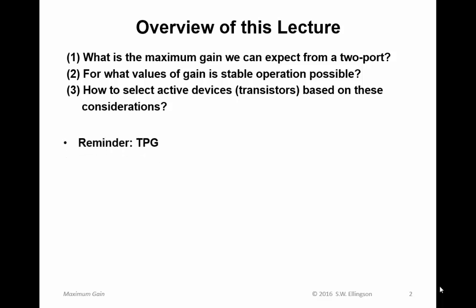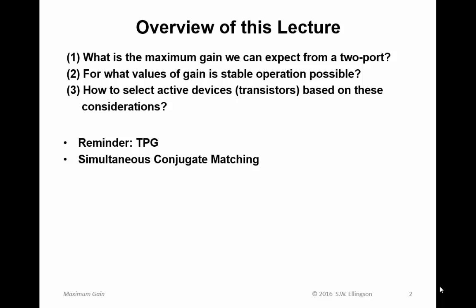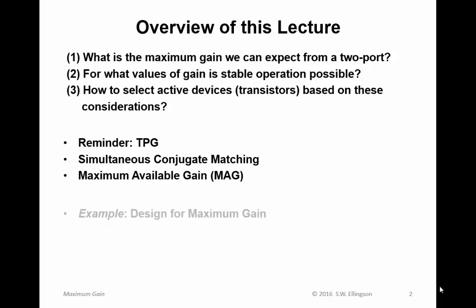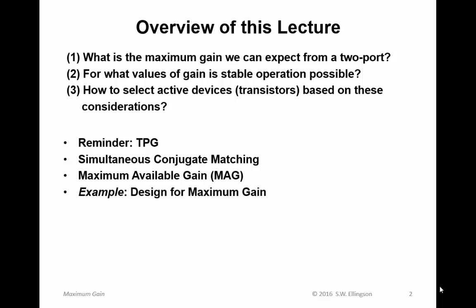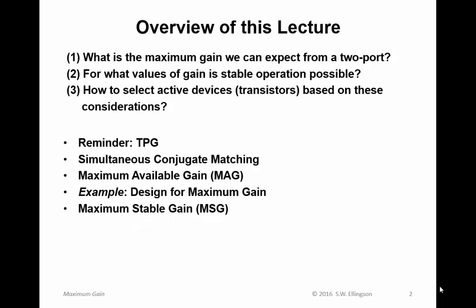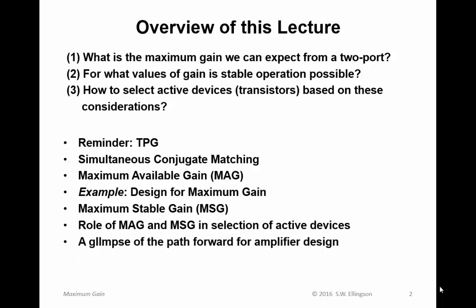First, I'm going to remind you about TPG, transducer power gain, because that's the definition of gain most relevant to the discussion we're about to have. I'll talk about simultaneous conjugate matching, which is the answer to the question of how we get maximum gain. Then I'll discuss maximum available gain, which is a useful way to compare active devices. We'll do an example design, where we'll take a transistor and determine how to achieve maximum gain in an amplifier. Then I'll talk about maximum stable gain, also known as MSG, and the role of MAG and MSG in the selection of active devices. Finally, a glimpse of the path forward for amplifier design.